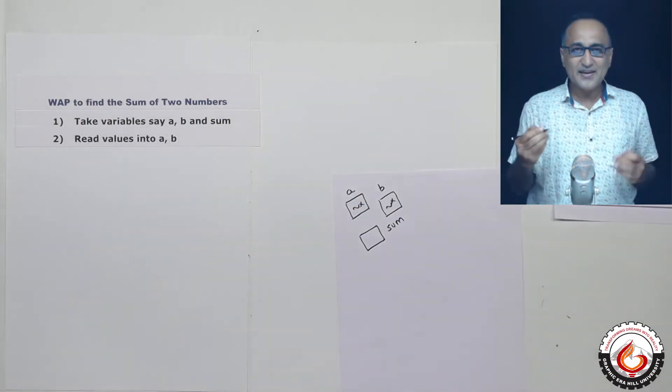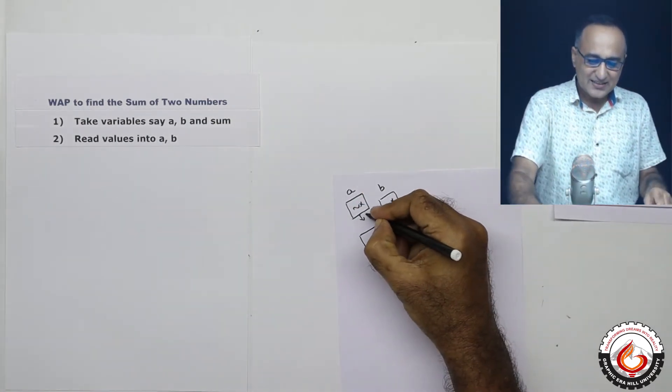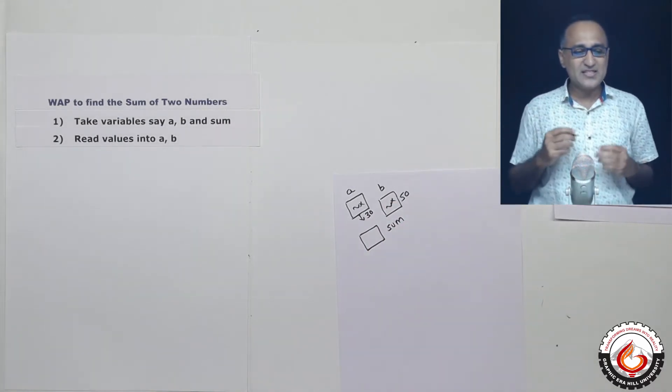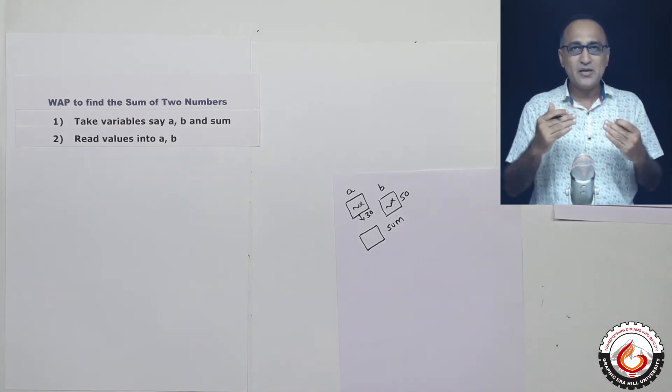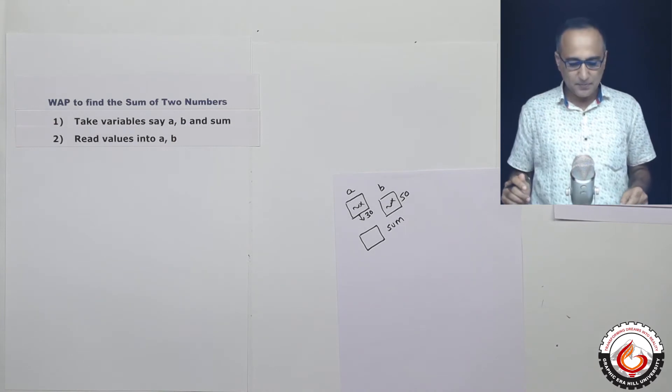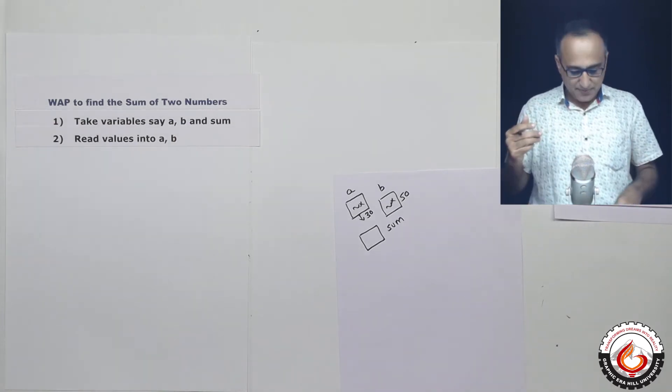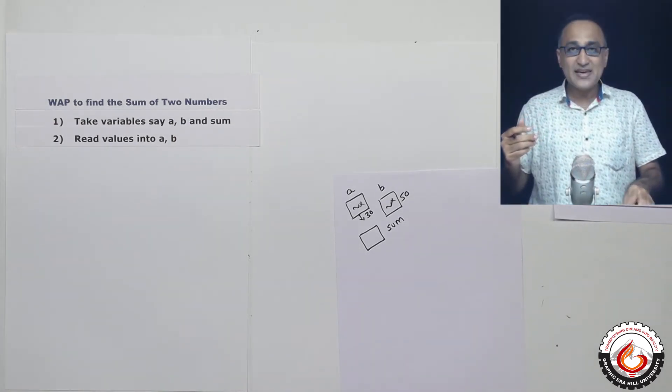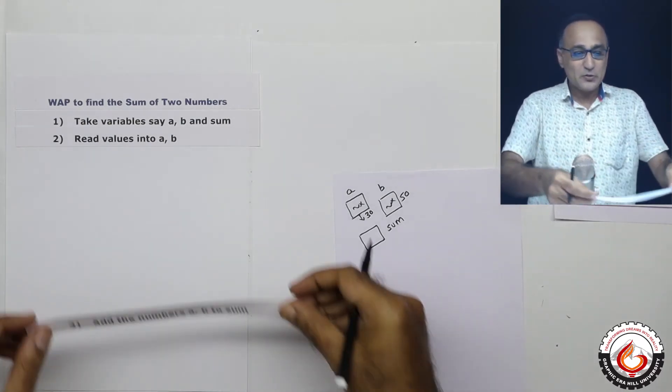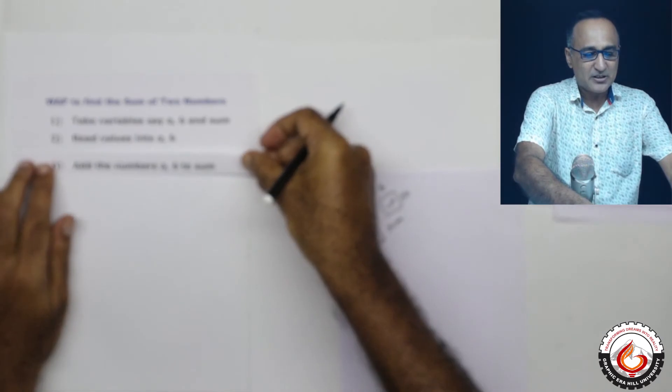So let's say I enter the value for a as 30 and the value for b as 50. Okay, these are the values I enter into a and b, or let's assume the user reads these values into a and b. Now what is the next step? The next step is I would be saying add the sum of or add a plus b to sum, or add the numbers to sum.